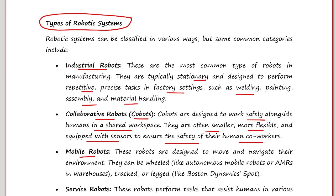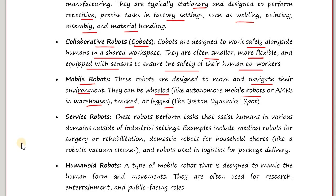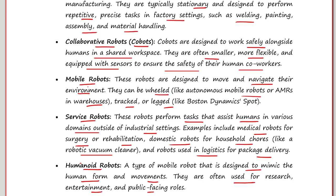Mobile robots are designed to move and navigate their environment. They can be wheeled, like autonomous mobile robots (AMRs) in warehouses, or tracked or legged, like Boston Dynamics' Spot. Service robots perform tasks that assist humans in various domains outside of industrial settings — examples include medical robots for surgery or rehabilitation, domestic robots for household chores like a robotic vacuum cleaner, and robots used in logistics for package delivery. We also have humanoid robots — a type of mobile robot designed to mimic the human form and movement, often used for research, entertainment and public-facing roles.